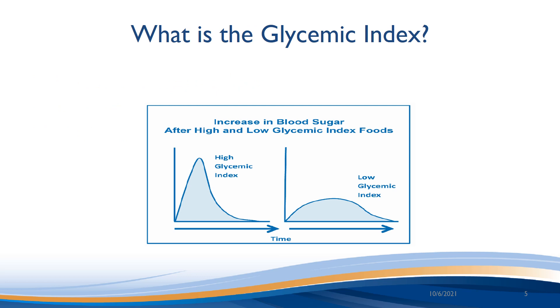Once you have a good understanding of which foods contain carbohydrates and what portion sizes work best for your blood sugars, you could consider choosing carbohydrates based on their glycemic index.